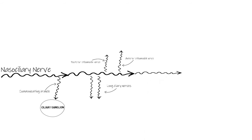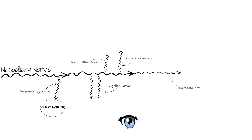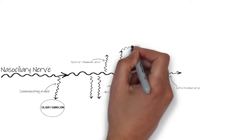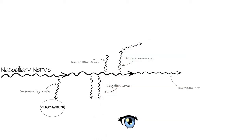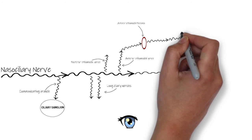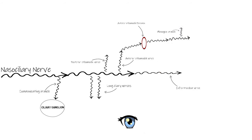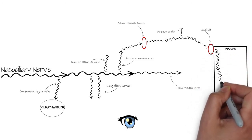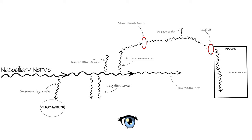The nasociliary nerve finally terminates outside the orbit as the infratrochlear nerve. All of these branches supply sensory innervation to structures of the eye and around the orbit. The anterior ethmoidal nerve continues forward, enters the anterior ethmoidal foramen, and at the level of the cribriform plate gives off a meningeal branch. It then enters the nasal cavity via the nasal slit, supplies the mucous membranes of the nasal cavity, and finally terminates as the external nasal branch, which innervates the skin on the lateral sides and tip of the nose.